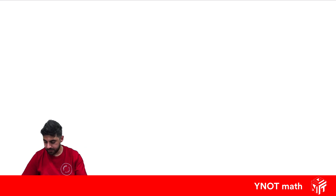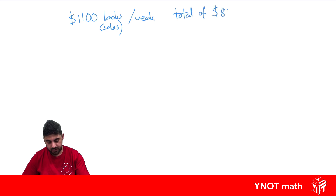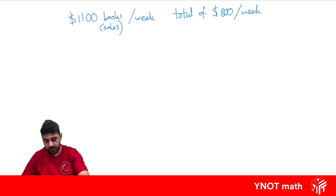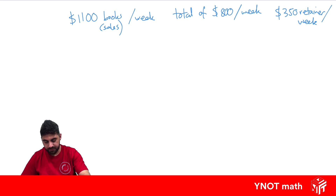Let's do one more example. Let's say you work in a bookshop and sell $1,100 worth of books — those are your sales for one week. You earn a total of $800 for that week, and there's an agreed-upon $350 retainer per week. This time we want to find the percentage commission.